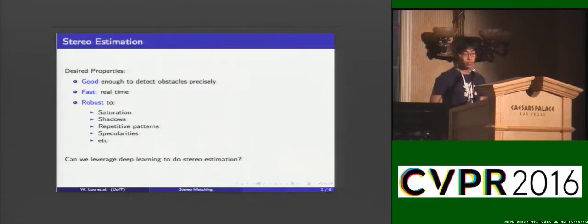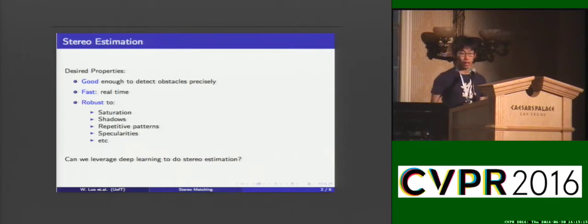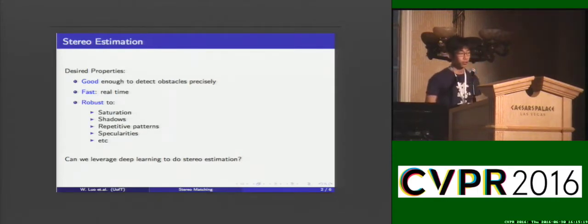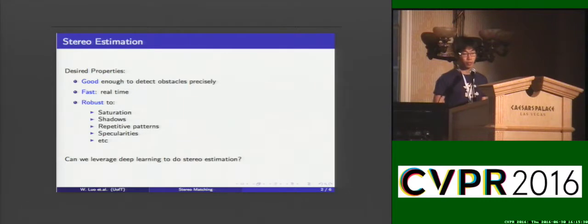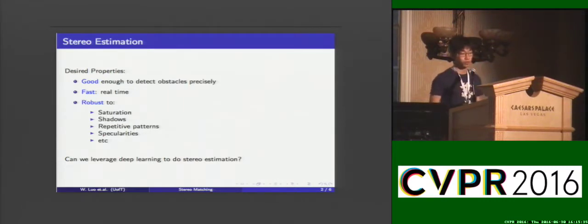Stereo estimation has been a challenging problem over the years, and in this paper we are interested in the application of autonomous driving, where we want our algorithm to be good enough to detect obstacles precisely. We want it to run fast, even towards real-time, and it needs to be robust when applied on real-world images, especially with occlusion, specularities, and so on.